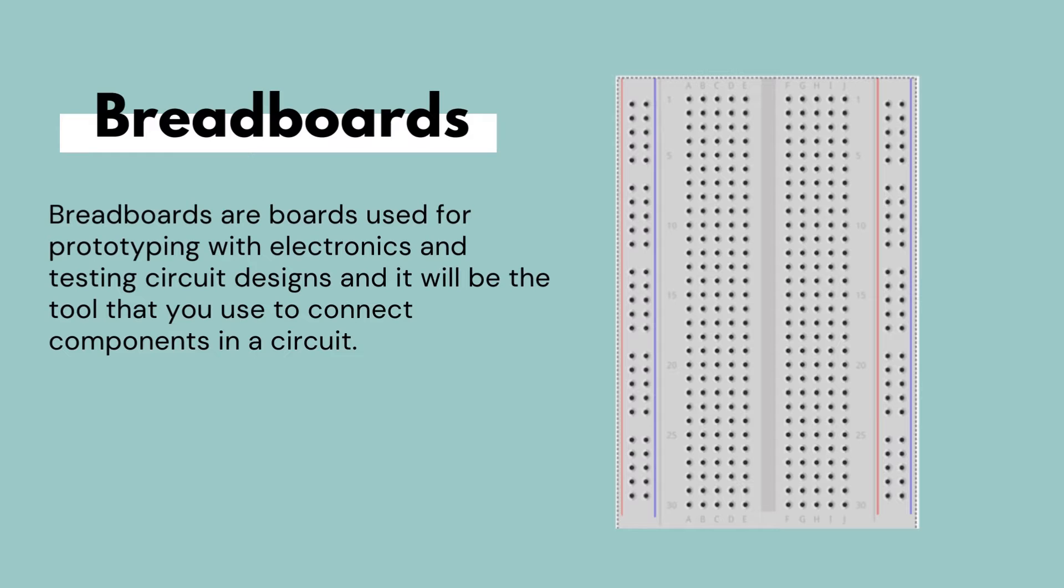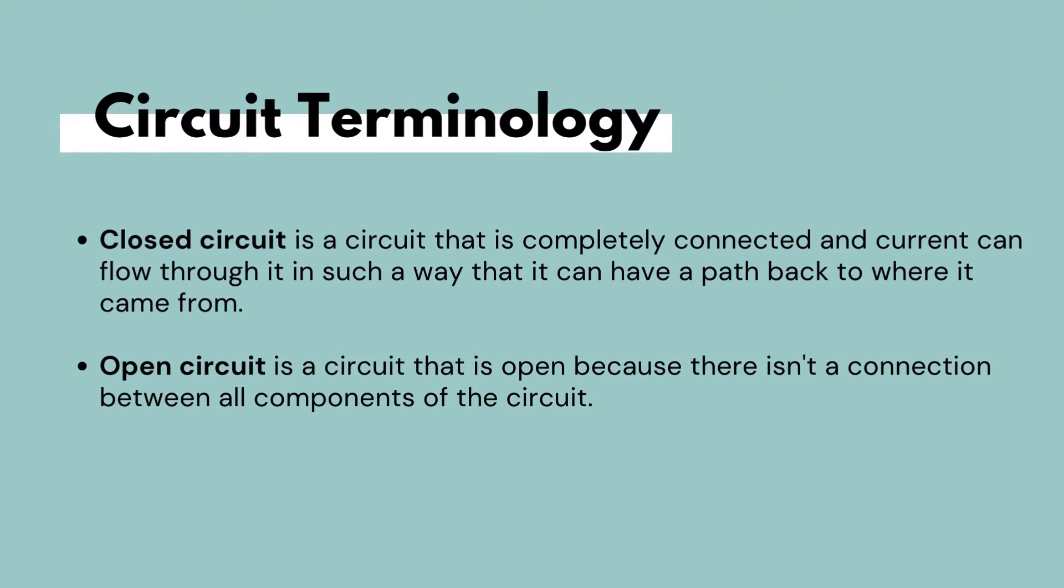Let's also take this opportunity to talk about some circuit terminology that we have mentioned in our last video. A closed circuit is a circuit that is completely connected and current can flow through it in such a way that it can have a path back to where it came from. Whereas an open circuit is a circuit that is open because there isn't a connection between all the components in the circuit.